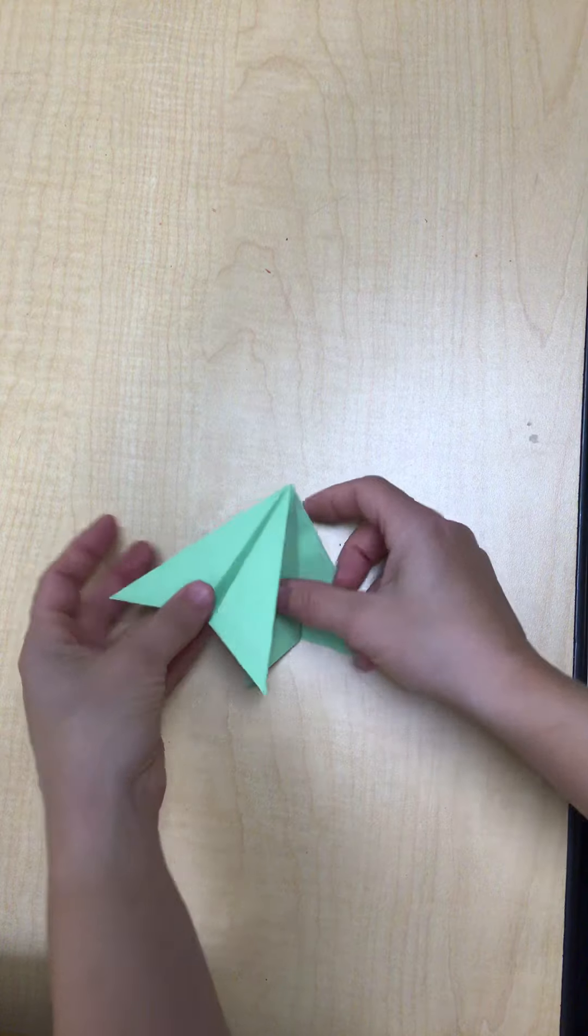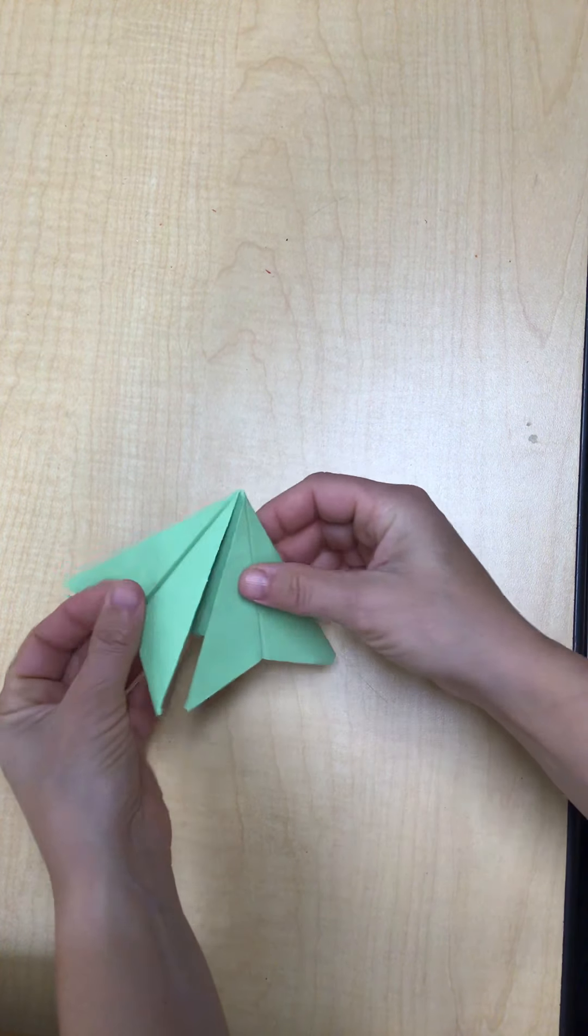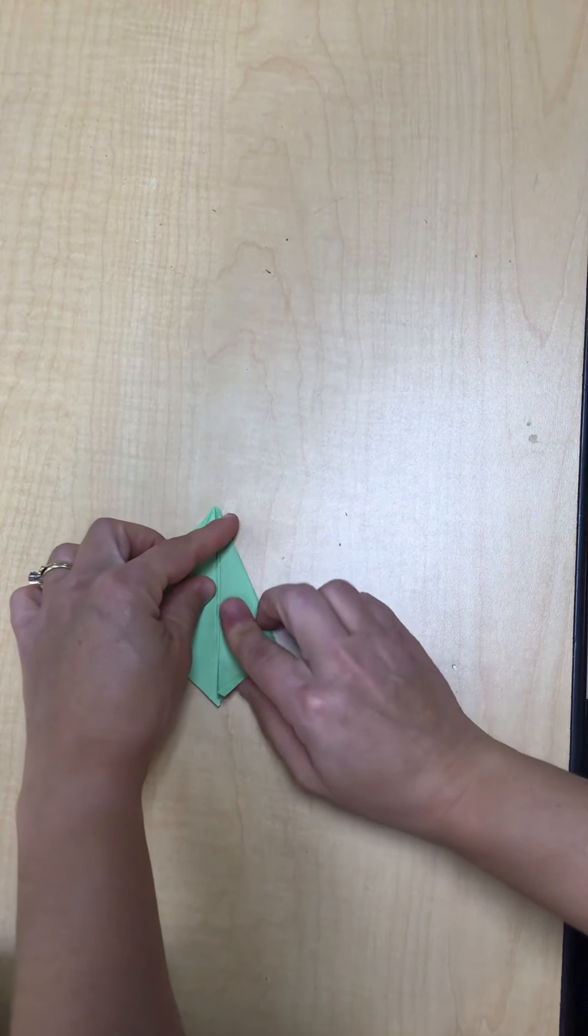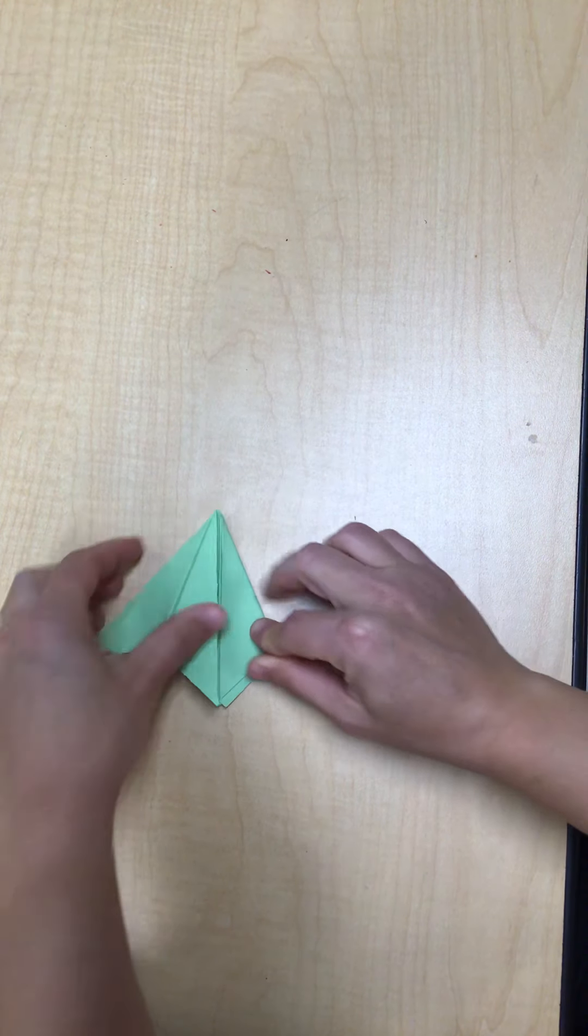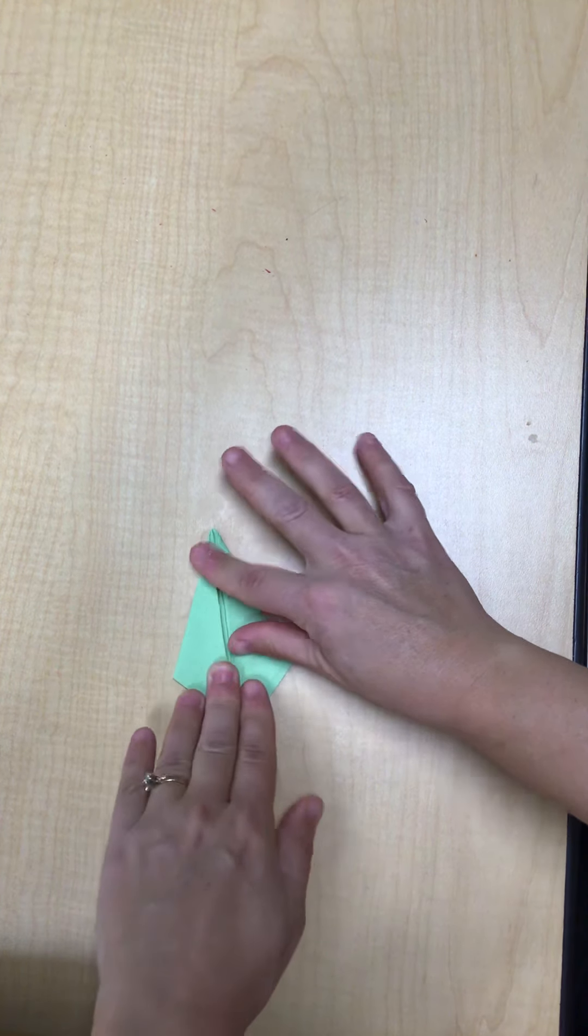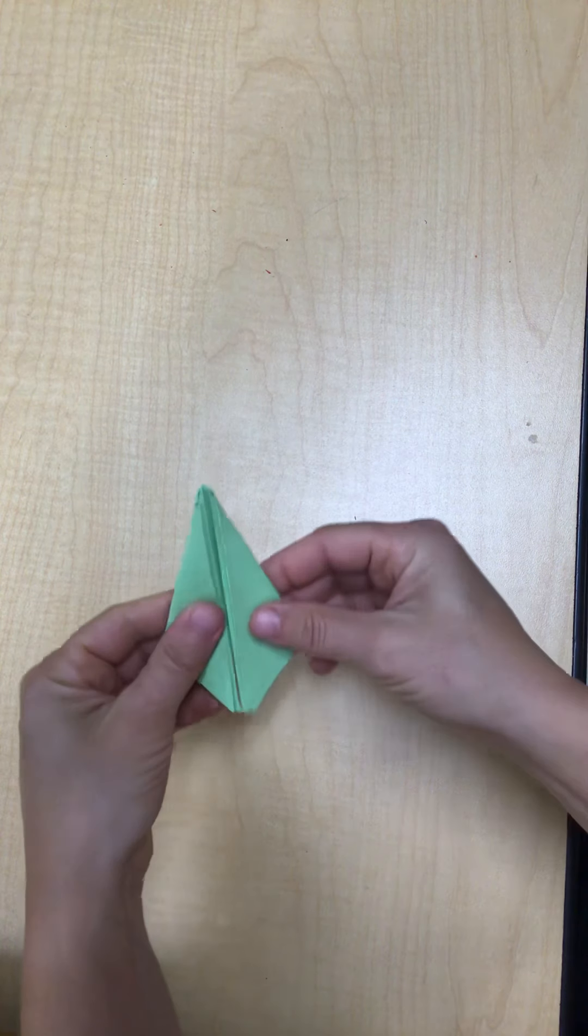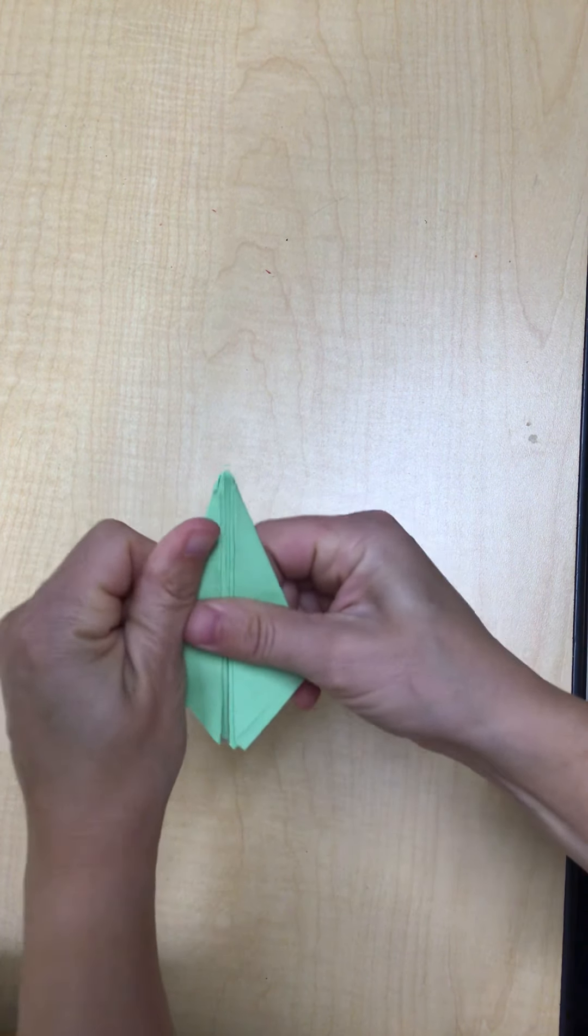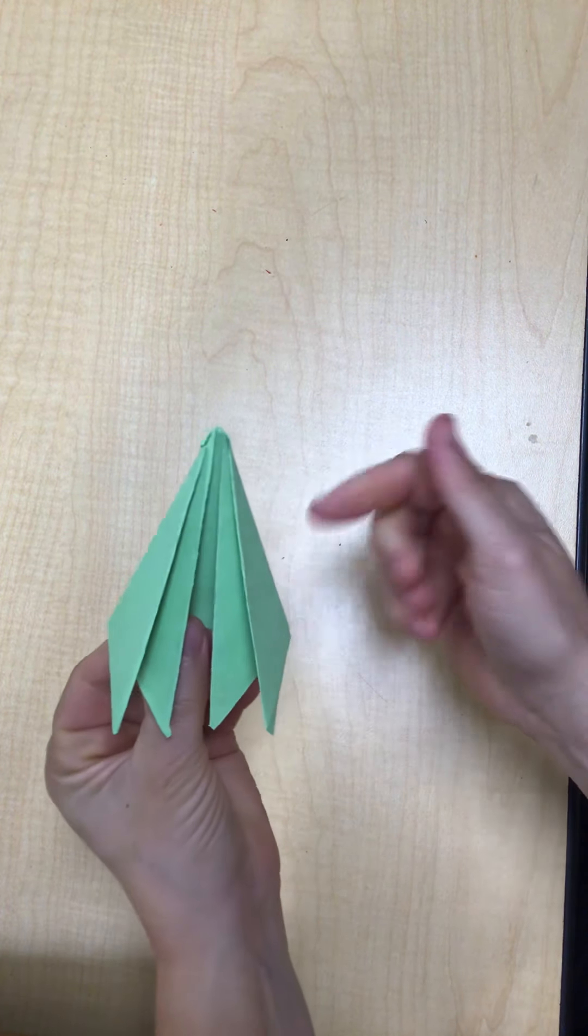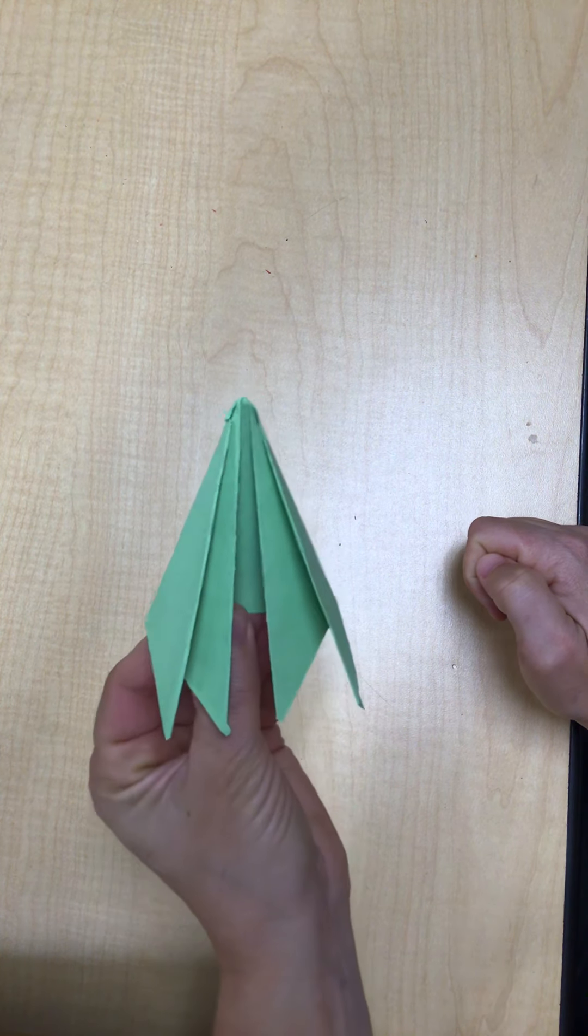Now instead of having this back triangle go backwards, take the back triangle and wrap it around the front, kind of like it's hugging that front triangle. This makes it more interesting on the front too. We have all these really neat folds.